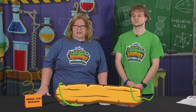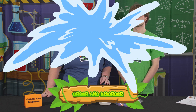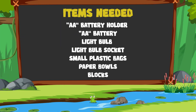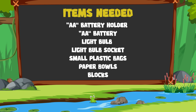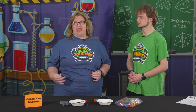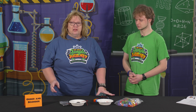This is Jungle Journey Day One — Order and Disorder for science. We're talking about creation today and how God made everything, and just to show kids that even if you had all of the ingredients which God produced, you still can't make something higher functioning than just those ingredients alone.